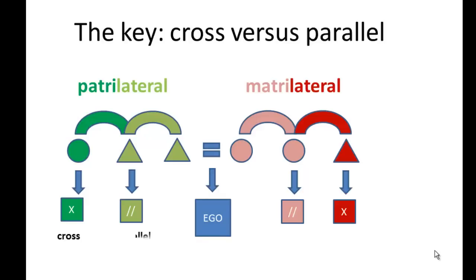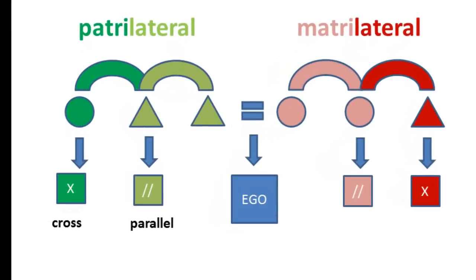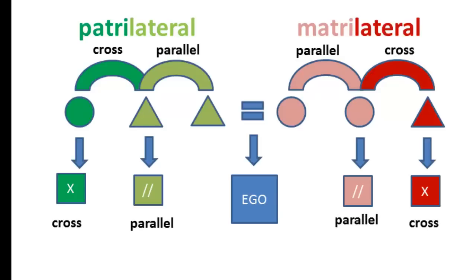Father's sister's children are cross-cousins. Father's brother's children are parallel cousins. That's because father's sister is his cross-sibling, and father's brother is father's parallel sibling. Similarly, mother's brother is her cross-sibling, and that means that mother's brother's children are cross-cousins to ego. And mother's sister is her parallel sibling because they're the same gender, which means that mother's sister's children are the matrilateral parallel cousins.